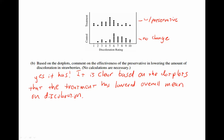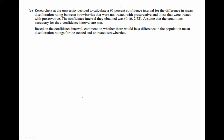Now let's move on to part C. Researchers at the university decided to calculate a 95% confidence interval for the difference in mean discoloration rating between strawberries that were not treated with the preservative and those that were treated with the preservative. The confidence interval they obtained was 0.16 to 2.72. Assume that the conditions necessary for the confidence intervals are met. Based on this confidence interval, comment on whether there would be a difference in the population mean discoloration ratings for the treated and untreated strawberries.